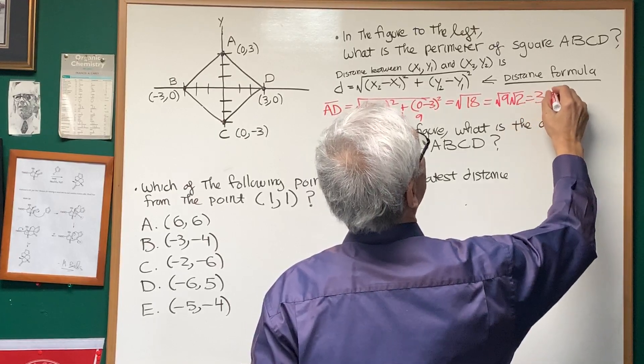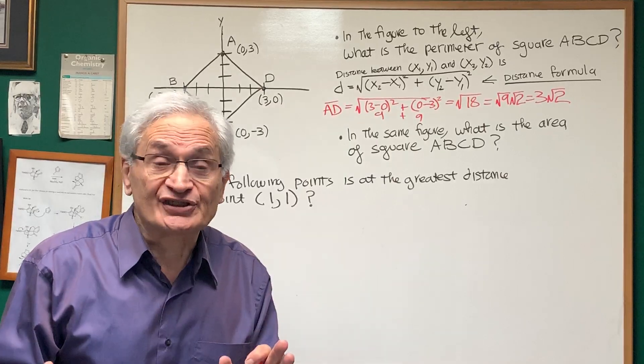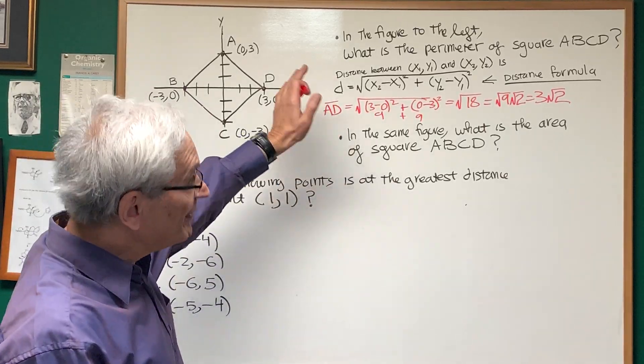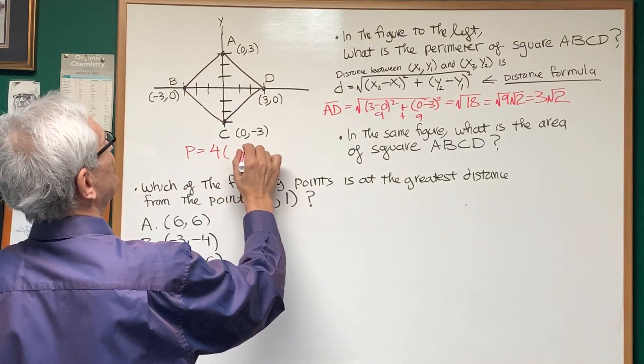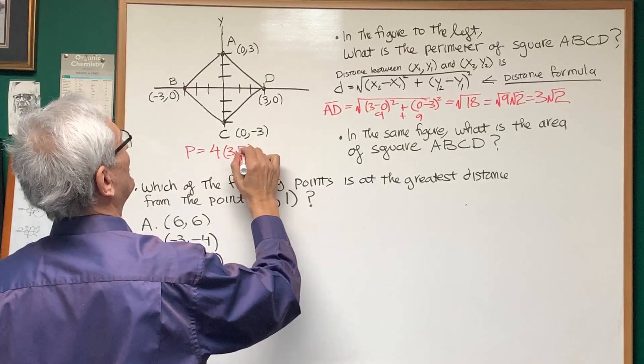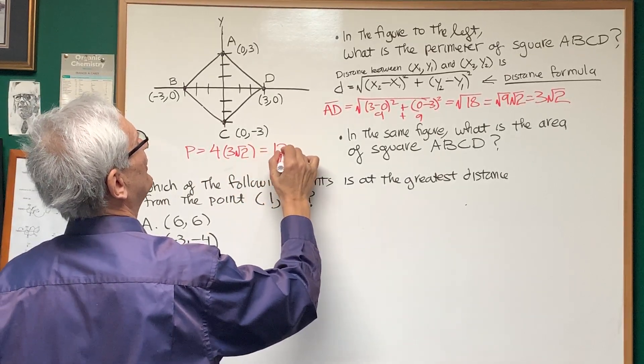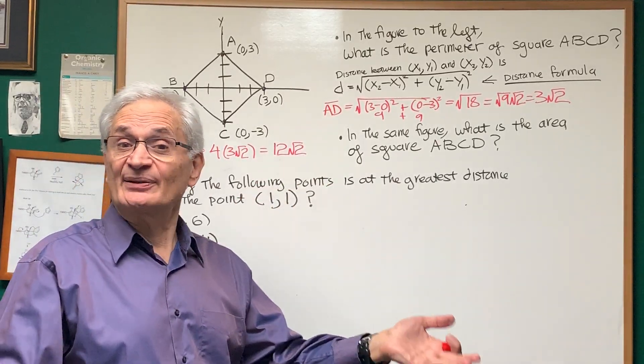Now remember, that's just the length of one of the sides. We want the perimeter, so the perimeter is going to be 4 times the length of one of the sides: 4 times 3 square root of 2, which is then going to be 12 times the square root of 2. Okay, very straightforward.